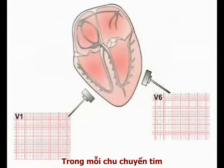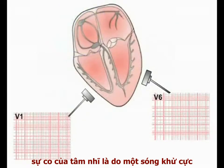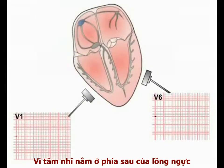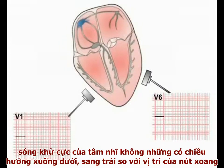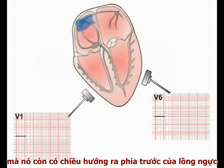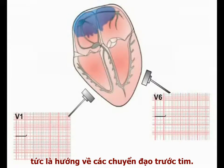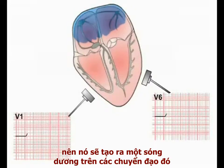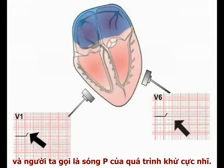During each cardiac cycle, atrial contraction is associated with a wave of depolarization spreading over the chambers. As the atria sit at the back of the chest cavity, this wave of depolarization is spreading not only downwards and towards the left from the SA node, but also outwards toward the front of the chest and therefore towards the chest leads. As this depolarizing current is moving towards the leads, it produces a positive deflection on the ECG paper. This is the P wave of atrial depolarization.